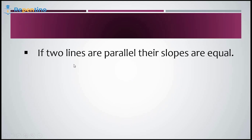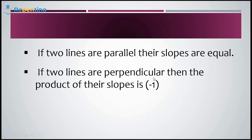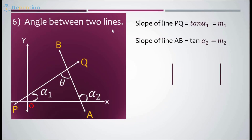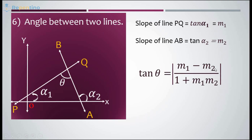Some important points: if two lines are parallel, then their slopes are equal. If two lines are perpendicular, then the product of their slopes equals minus 1. For the angle between two lines PQ and AB, with slopes m1 and m2 respectively, the angle theta satisfies: tan(theta) equals mod of (m1 minus m2) / (1 + m1·m2).